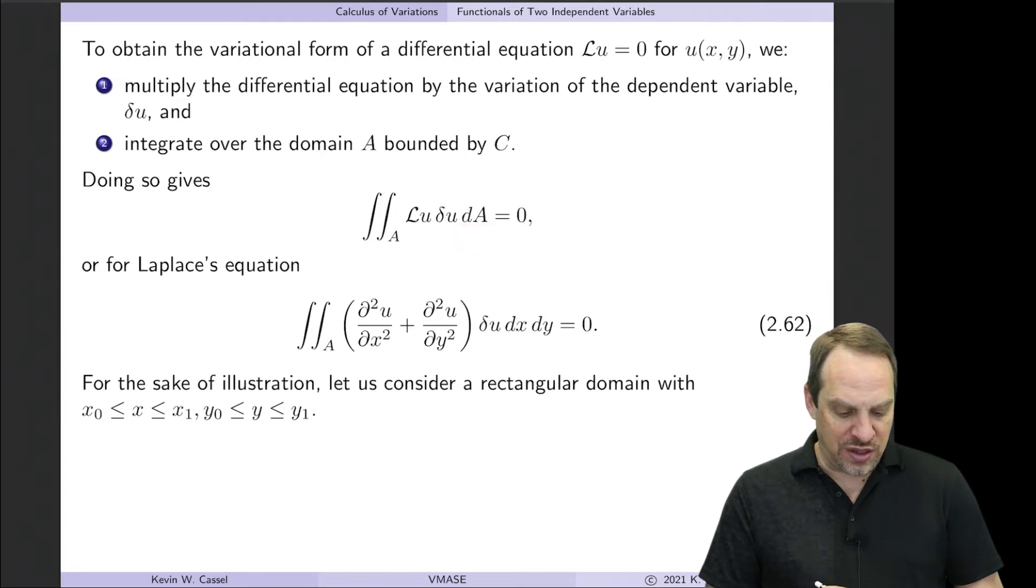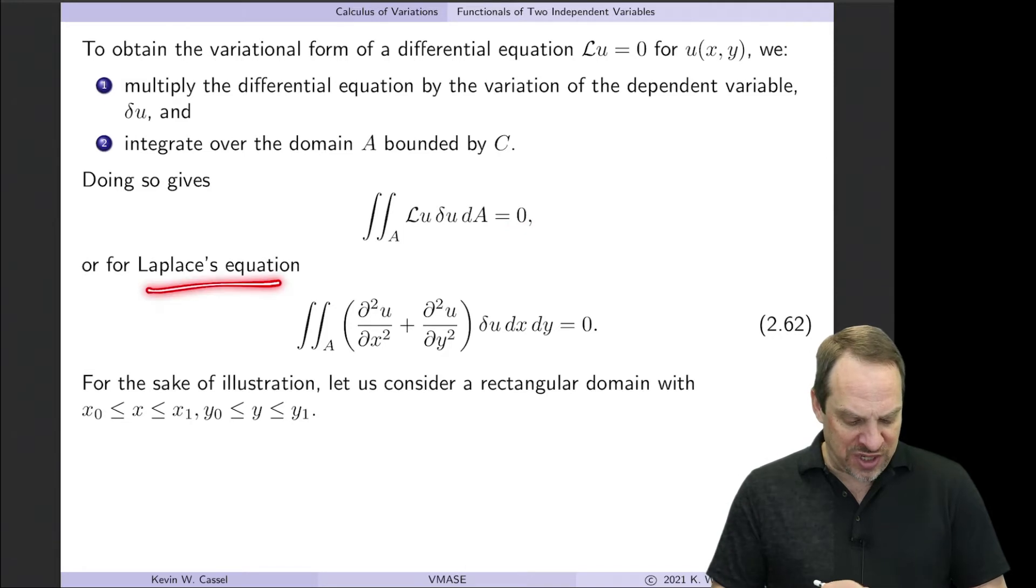So we end up with this area integral, because it's a two-dimensional problem, over dA of our differential equation, L operating on U times the variation of U, the dependent variable, set equal to zero. In our case, we have Laplace's equation. So this is the area integral of ∂²u/∂x² plus ∂²u/∂y², all times delta U, and that's equal to zero.